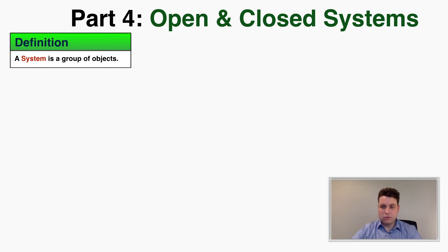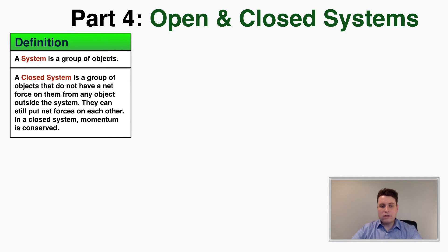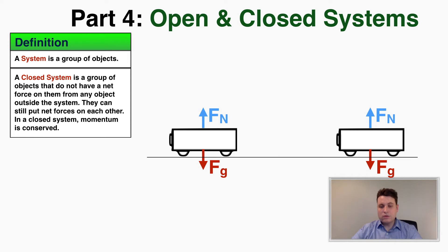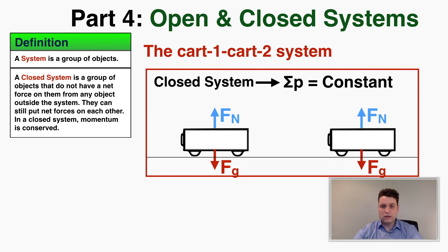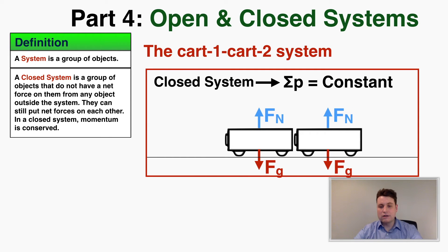A closed system is a group of objects that do not have a net force on them from any object outside of that system. They can still put net forces on each other. In a closed system, momentum is conserved — the total momentum remains the same. An example is a cart-one cart-two system where the only unbalanced force each cart experiences is coming from the other cart, from something inside the system. So whatever change in momentum one cart receives, the other cart loses — the total momentum is constant.